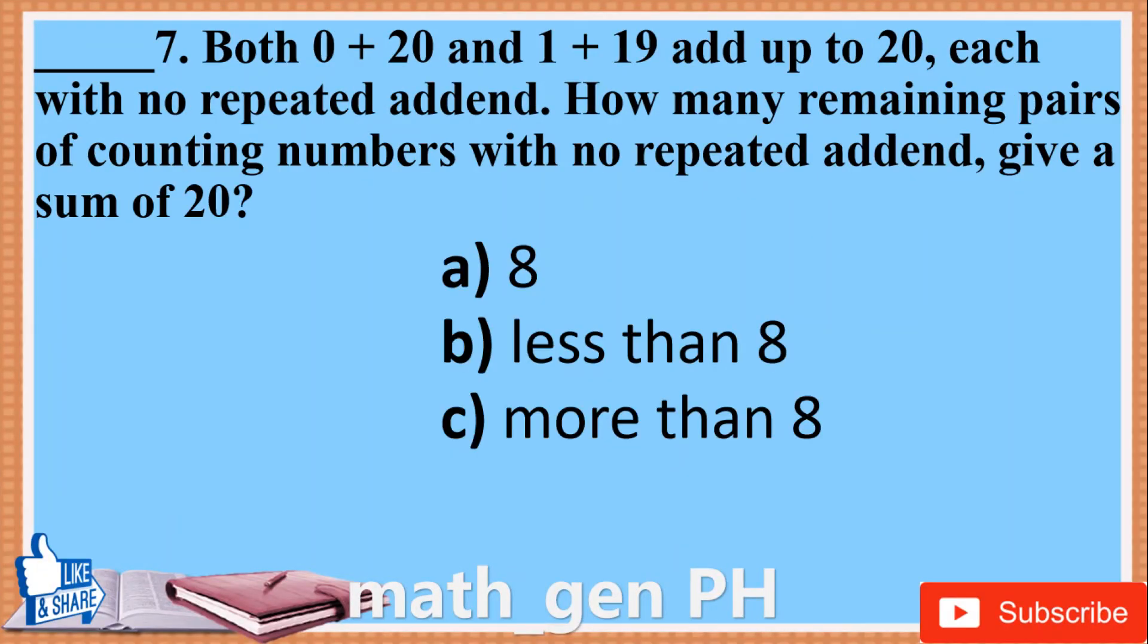Question 7: Both 0 plus 20 and 1 plus 19 add up to 20, each with no repeated addend. How many remaining pairs of counting numbers with no repeated addend give a sum of 20?